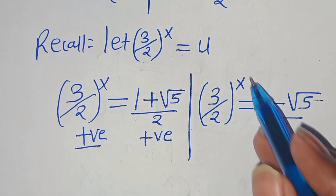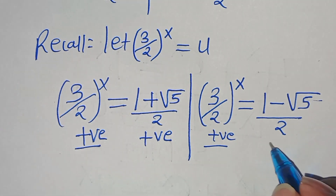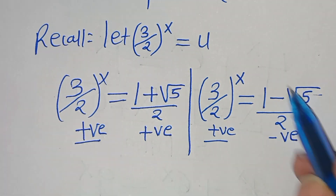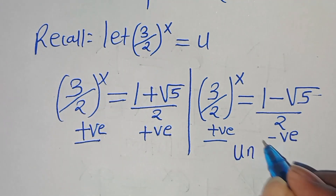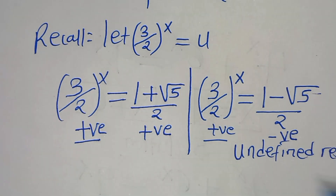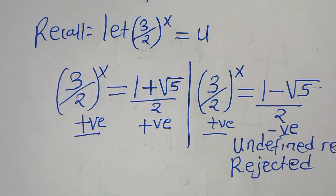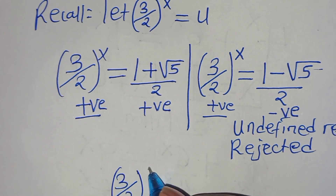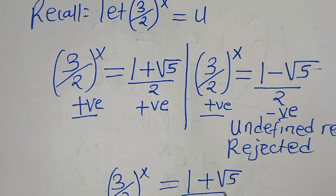On the second part, (3 over 2)^x is positive, but the right-hand side — 1 minus square root of 5 — gives a negative value. Introducing logarithm here means we cannot solve for x, so we get an undefined result. This solution is therefore rejected. We proceed with (3 over 2)^x equals (1 plus square root of 5) divided by 2.